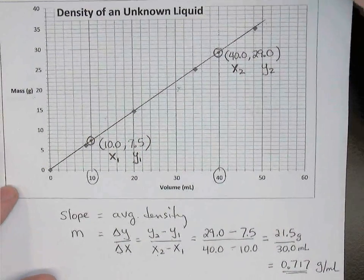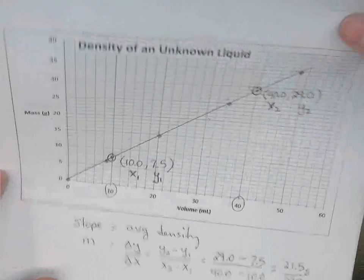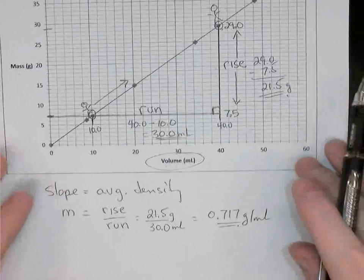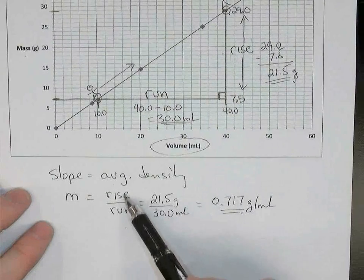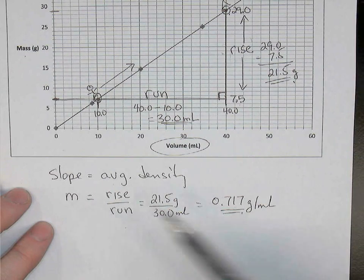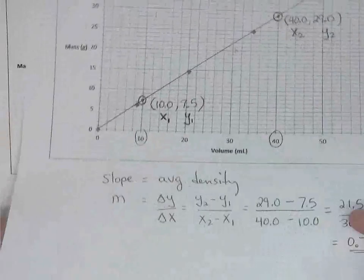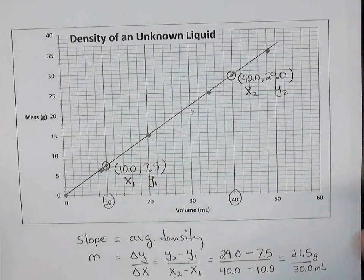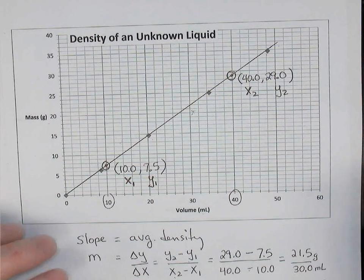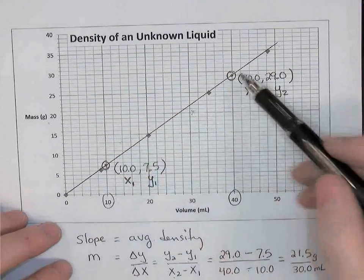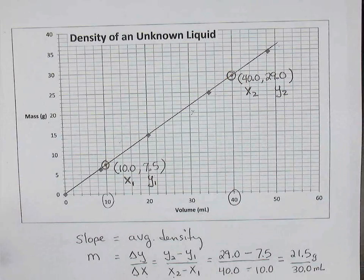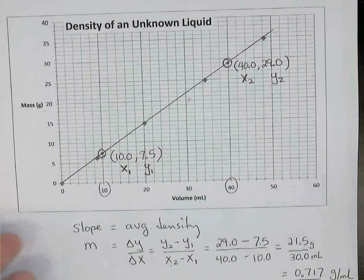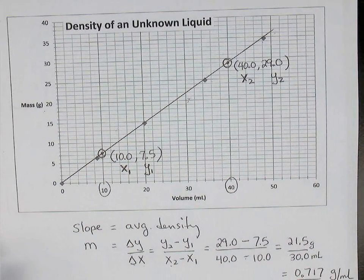So on your test this week, on your exam, you might be given a graph like that. You might be given the line of best fit or you'd have to draw it yourself like I did. Pick any two points on the line and then go find the average density by finding the slope of that line. I hope that helps with your studying. Good luck.